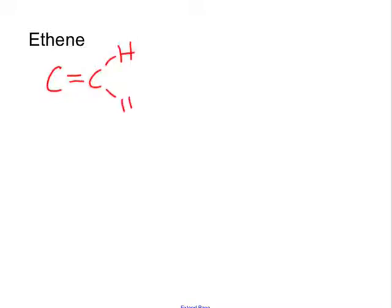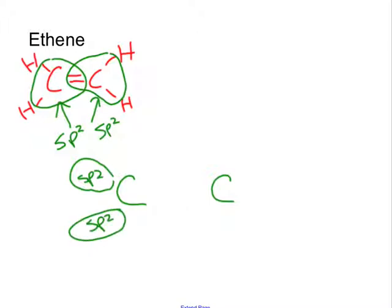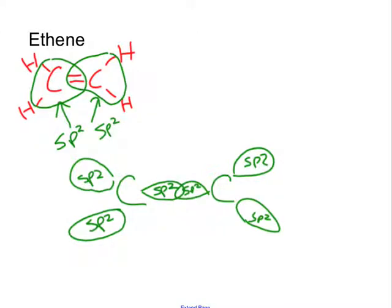Moving on to ethene, which has a double bond. Because of the double bond, the number of areas around each carbon decreases, giving a different hybridization. Each carbon has three areas around it, so the hybridization of each is sp2. Around each carbon are three sp2 orbitals 120 degrees apart. The sp2 orbital on one carbon overlaps head-to-head with the sp2 orbital on the other carbon, creating a sigma bond.